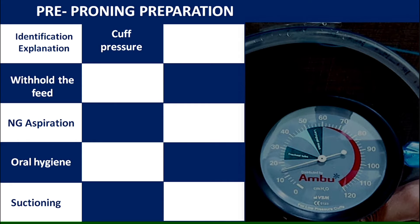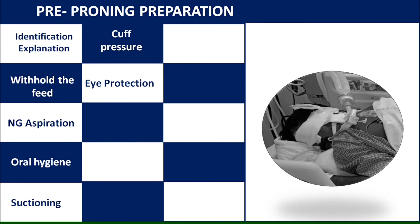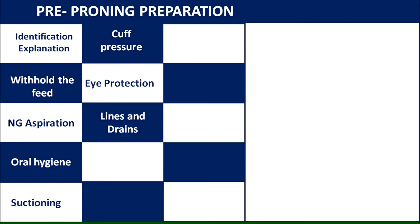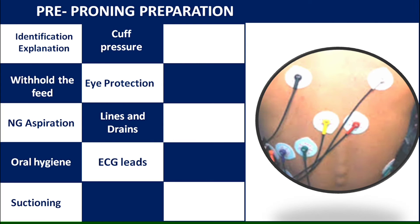Check the endotracheal cuff pressure and protect the eyes of the patient with eye pads. Regarding lines and drains: if chest drains are present they should be positioned properly; if ostomy bags are present they must be emptied before positioning. Foley's catheter is secured at the inner thigh to prevent obstruction during positioning. Mark the levels where the endotracheal tube and nasogastric tubes are fixed.